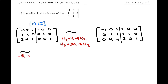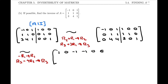We can apply two operations in the same step: minus row 1 becomes row 1, and row 3 minus 4 times row 2 becomes the new row 3. Applying those two operations, we get row 1: 1 0 −1 | −1 0 0; row 2: 0 1 1 | 1 1 0; and row 3: 0 0 0 | 3 −4 −1.